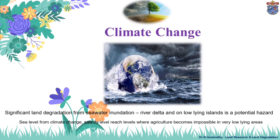Significant land degradation from sea water in river deltas and on low-lying islands is a potential hazard. Sea level rise from climate change increases the salinity level and reaches levels where agriculture becomes impossible in very low-lying areas.